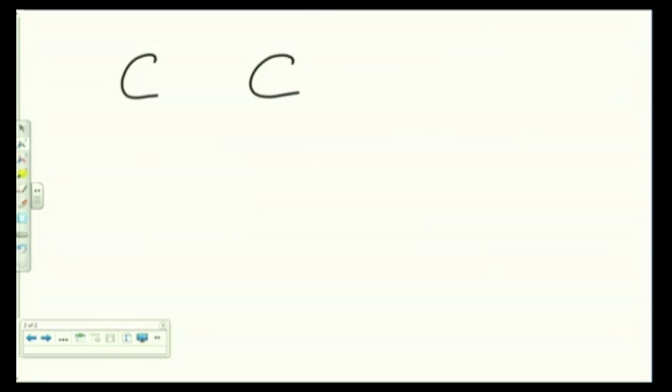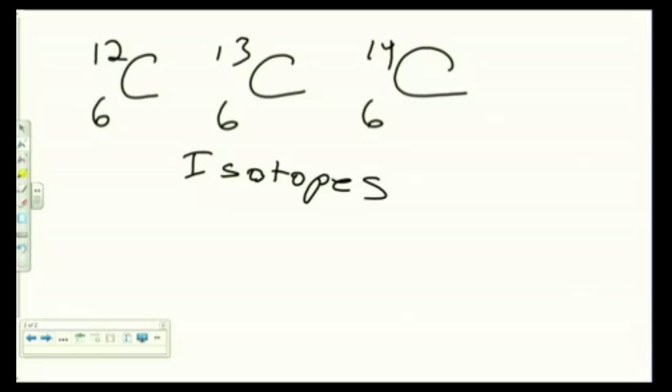Let's put three atoms of carbon up here. How many protons does every one of these atoms have? Six, you already said that, right? These are three isotopes of carbon. Isotopes are atoms of an element that have different mass numbers. Here I have three atoms of carbon. They all have six protons. What's different here? Here I have a 12, a 13, and a 14. They have different numbers of neutrons.